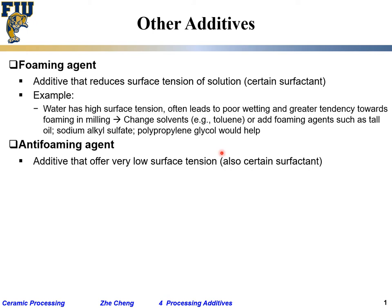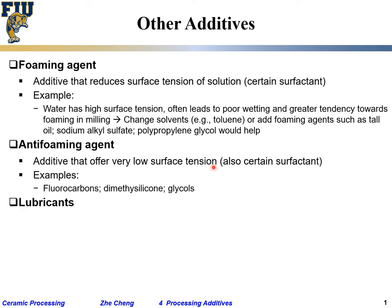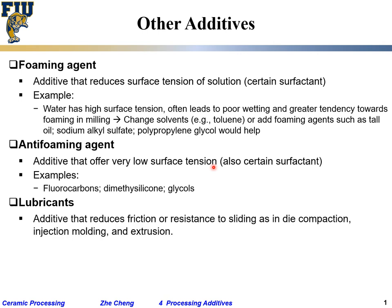Anti-foaming agent: used to remove bubbles. It offers low surface tension. Certain surfactants work for this — fluorocarbon, dimethyl silicone. I don't use these too often personally, but probably for industrial production people use them.